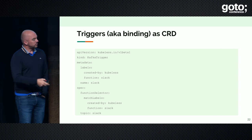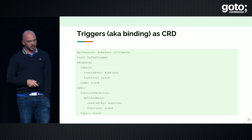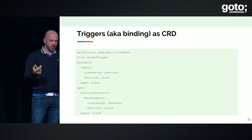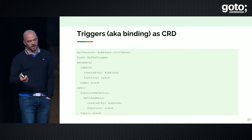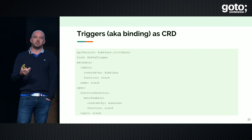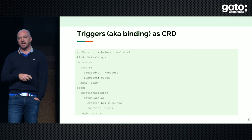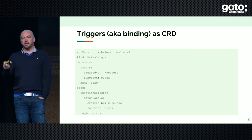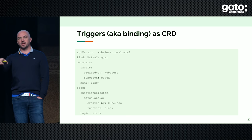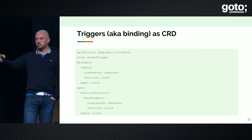What we've done in Kubeless is modify the system and create a way to define triggers. Any event source — your database, your Kafka, your NATS, your Kinesis, your AWS SQS — we can define those event sources as Kubernetes objects. So if you're trying to do a Twitter application where you have a Kinesis stream sending events to your function and then inserting those events in a database, we can actually define the mapping between the Kinesis stream and the function as a Kubernetes manifest.